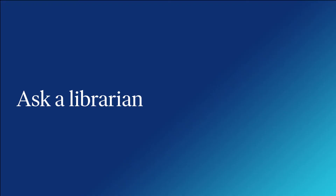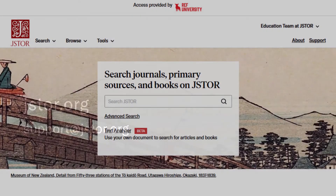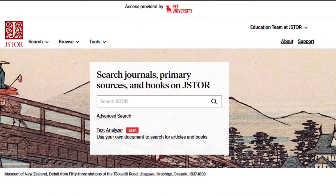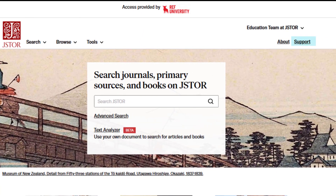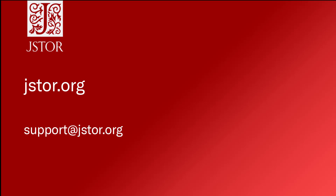Ask your librarian if you're having any trouble at any point in the research process — they are trained to help people find information and they're ready to help you. Join us for other videos where we'll explore ways to do research on JSTOR in more detail. If you have any questions, use the support button to navigate to that page or contact us at support@JSTOR.org. Thanks for joining me today. Happy searching!